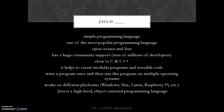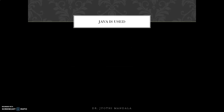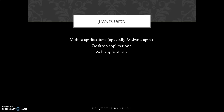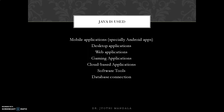Java is a high-level programming language and it is an object oriented programming language — what object oriented programming is, we will see in future classes. Java is used to develop mobile applications, especially Android apps. It is also used to develop desktop applications, web applications, gaming applications, cloud-based applications, software tools, and database connectivity. Much more can be done using Java.